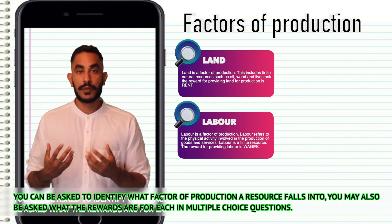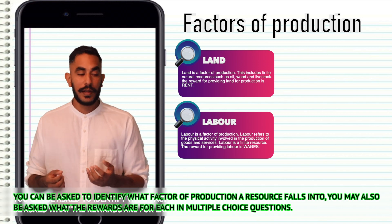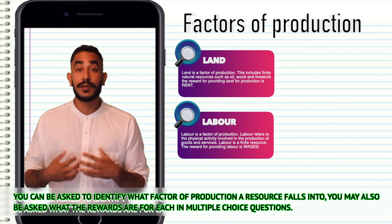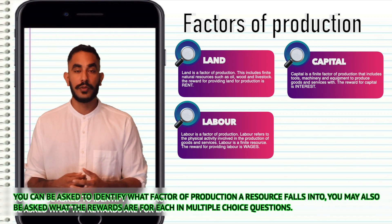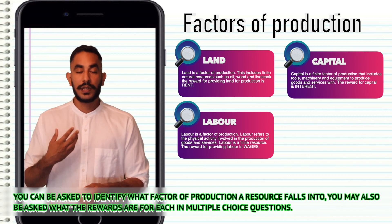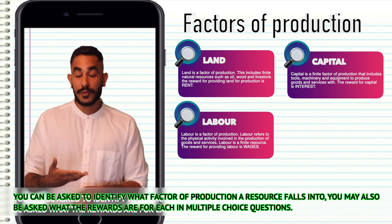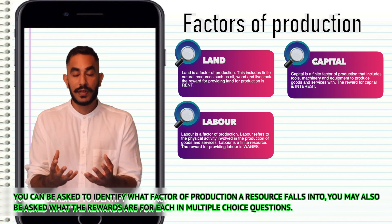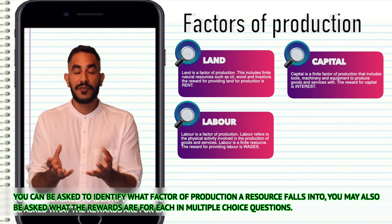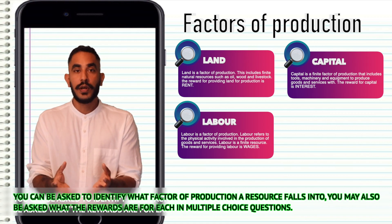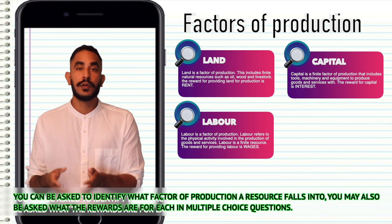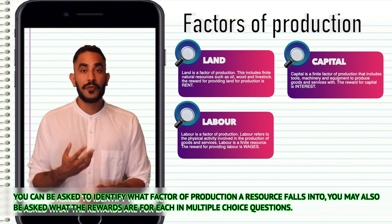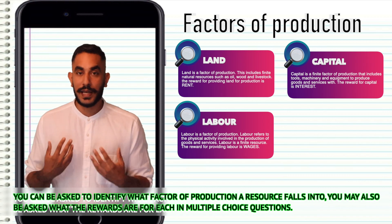The third factor of production we might need, now that we've got materials and workers, is machinery to assemble the phones. For the sake of your AS level microeconomics course, the type of capital you need to understand is physical capital — capital that can be used to produce things with. The reward for capital is interest.